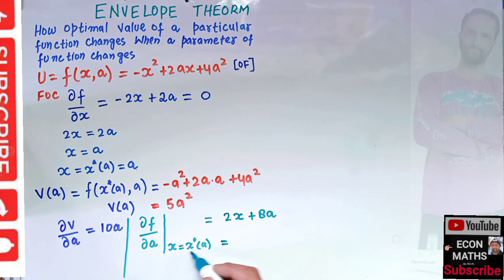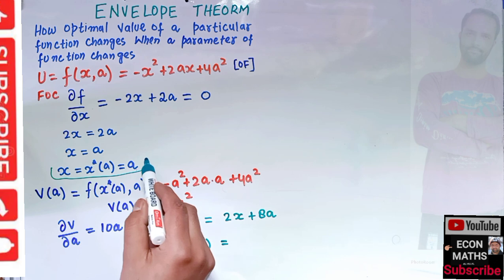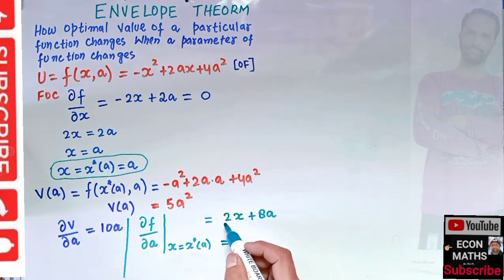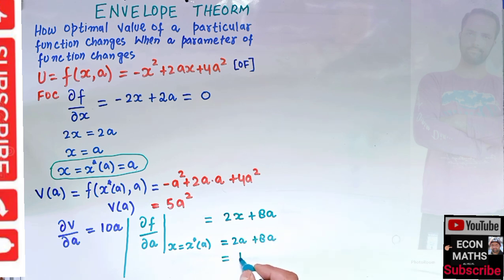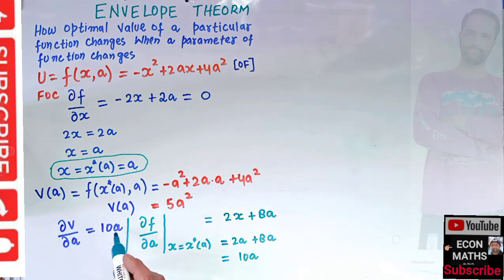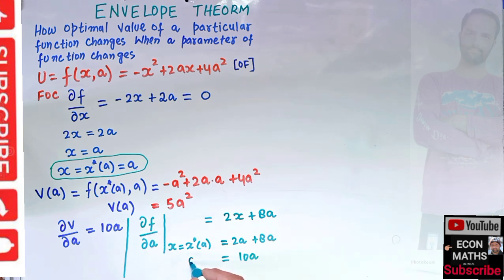When we evaluate df/da at the critical point x-star(a) equals a, we substitute x with a: we get 2a plus 8a, which equals 10a. This is the same result as dV/da equals 10a that we obtained earlier.